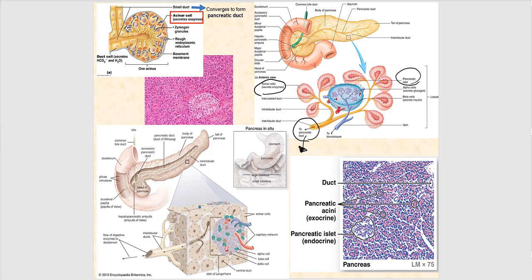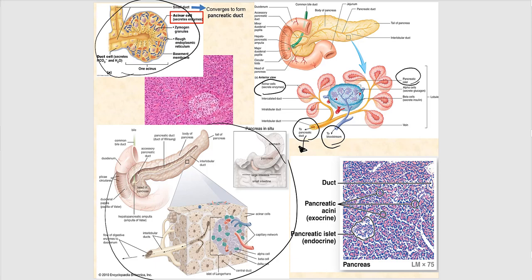Looking at histological images of the pancreas: on the top left, we see those acinar cells — the exocrine part — producing digestive enzymes that end up in the pancreatic duct and empty into the duodenum. These actual slides of the pancreas show the pancreatic islets with alpha and beta cells producing insulin and glucagon, and surrounding them are the acinar cells producing those pancreatic enzymes.